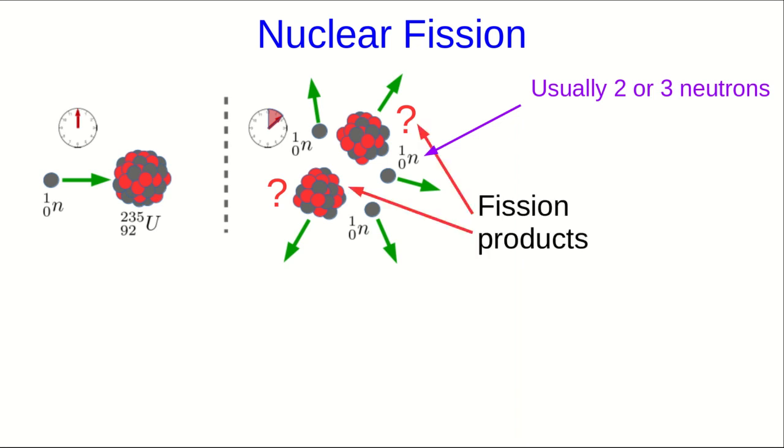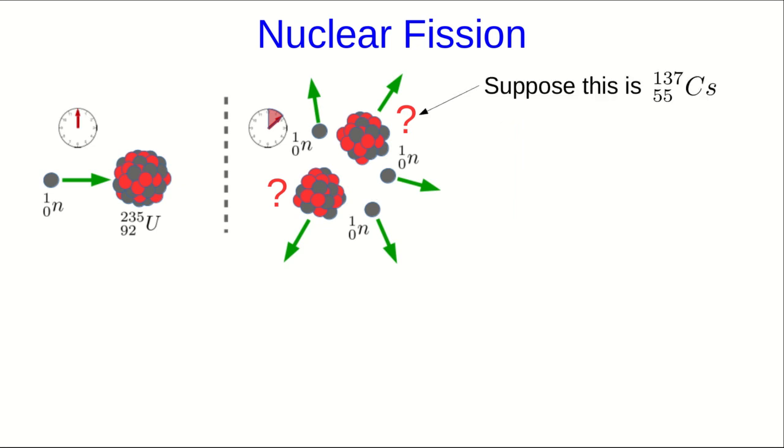The large pieces that it splits into are referred to as fission products, and there are many possibilities. So, for example, let's just suppose that this fission product is cesium-137, and let's figure out what the other fission product is by using this reaction equation.